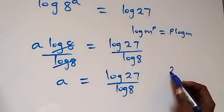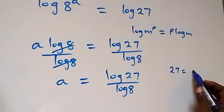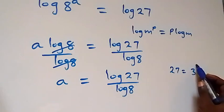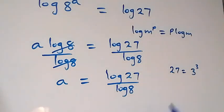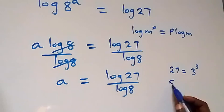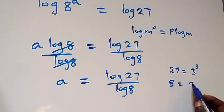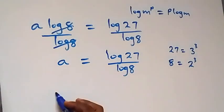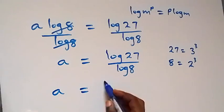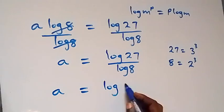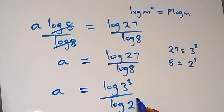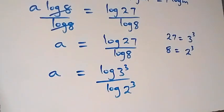We can write 27 as 3 times 3 times 3, that is 3 raised to power 3. Also we can write 8 as 2 times 2 times 2, that is 2 raised to power 3. This implies we have a equals log 3 raised to power 3 over log 2 raised to power 3.